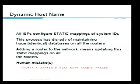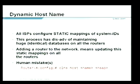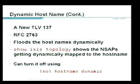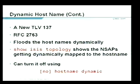Dynamic hostname: historically there was no TLV to advertise hostnames, so you had to do CLNS host mappings — very cumbersome with 400 routers. A new TLV, TLV 137, documented in RFC 2763, was introduced about two years ago to flood hostnames dynamically. You can see hostname mappings with 'show isis topology.'